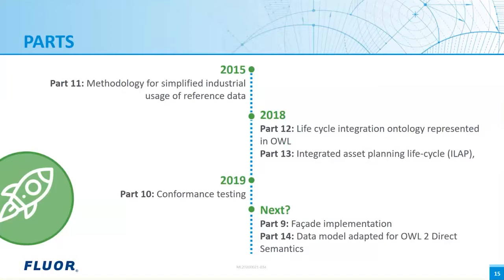Part 11 of ISO 15926 was implemented for the use of GELISH — Generic Engineering Language — which is an alternative way of data modeling. Part 12 was released to show how an ontology can be made, but the upcoming Part 14 will be another way of doing that. Part 13 is for doing planning on an EPC project. Part 10 is for conformance testing, used by software companies to validate if their software is compliant. Part 9 is about facades — the outside facing of databases — covering federation and security technology, and is still under construction, as is Part 14.